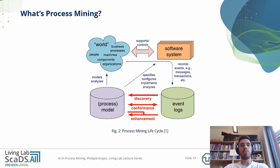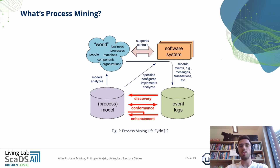Here you can see the process mining lifecycle. On the top left, you can see the real world — like business processes, people, and organizations. This real world controls different software systems. Those software systems record the events happening, like messages or transactions. Those events are summarized in a so-called event log. With the help of this event log, we can perform different process mining activities like discovery, conformance checking, and enhancement. And based on the obtained process models, we are able to analyze and model the real world.